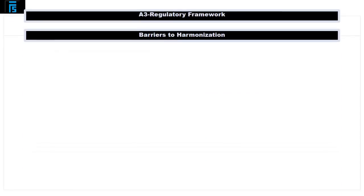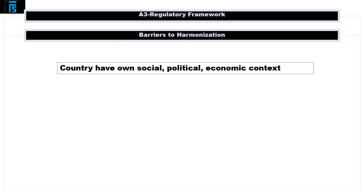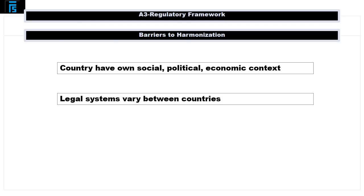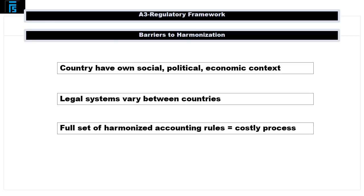At the same time, there still exist considerable barriers that make the full harmonization of accounting standards an improbable, if not impossible, task. Individual countries typically have their own social and political ends which can prevent full harmonization. Furthermore, the legal systems of different countries vary widely, so some harmonized solutions are not easily transferable to all countries concerned. One point of particular contention is typically the relationship between accounting and tax regulations, which is often set up differently across jurisdictions. And finally, developing a full set of harmonized accounting rules and making companies adopt them is a very costly process, and those high initial costs often overshadow the future benefits which harmonization is expected to bring.